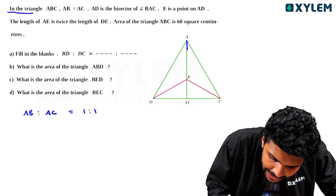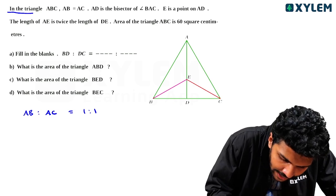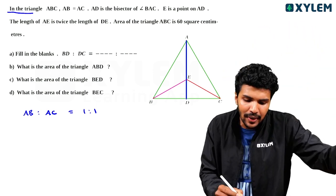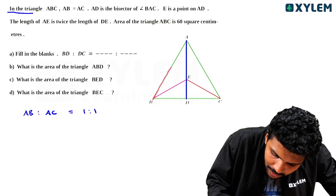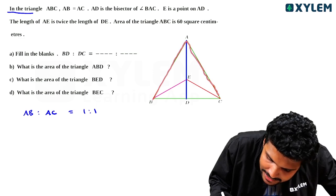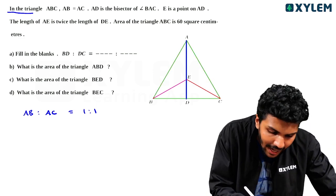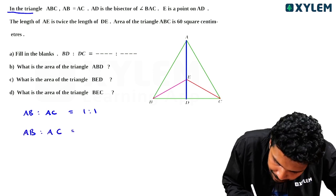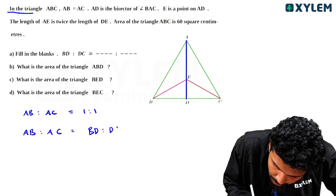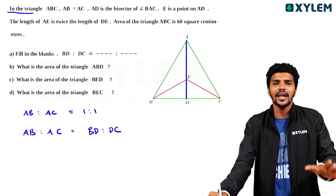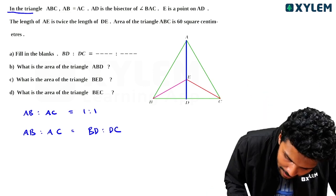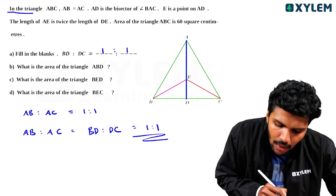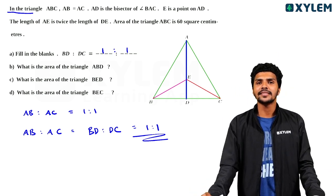What do you think about AD? This is AD, this angle BAC. What is BAC? It's a very important question. We have AB is to AC, and BD is to DC equal. So BD is to DC is 1 is to 1.